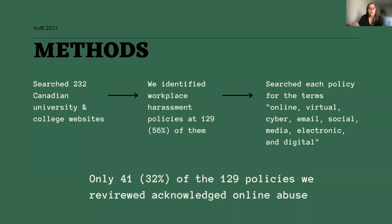To do this work, we searched the public websites of 232 universities and colleges across Canada for their harassment policies. We were able to identify 129 policies, and of those 129, we found that only 41 of the policies addressed online abuse. Using NVivo 12, we coded the 41 policies to identify how exactly university and college community members might be protected from online abuse within the context of their institution's policies.